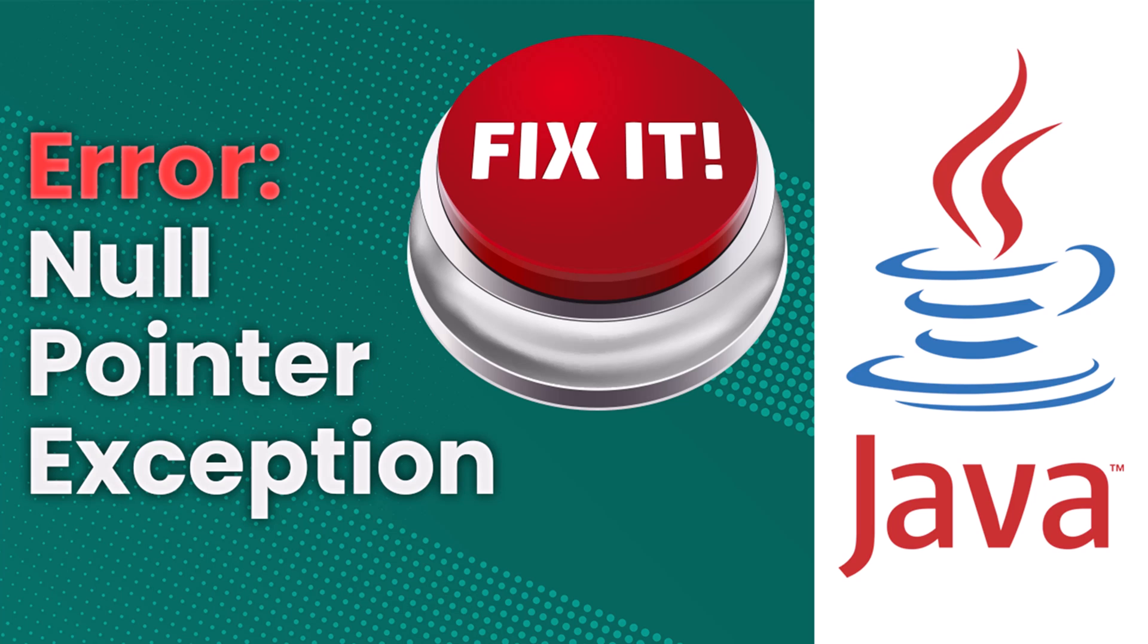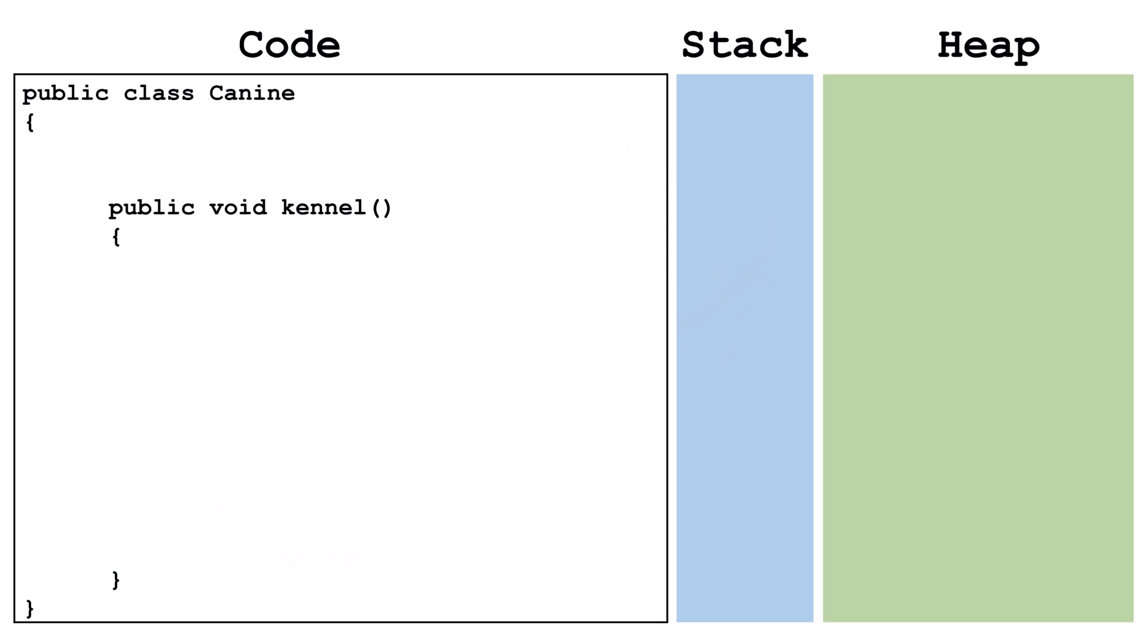Welcome. In this video, you'll learn what causes null pointer exceptions and how to fix them. Null pointer exceptions only happen with object types, so we won't be looking at any primitive data types in this example. Take a look at this class canine. It's got a method kennel in it.